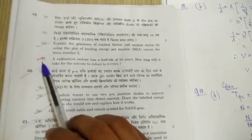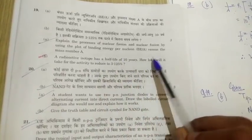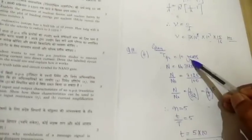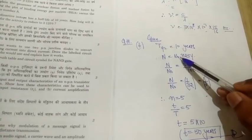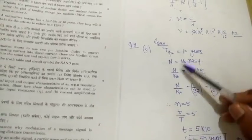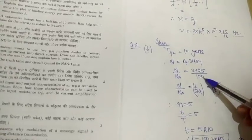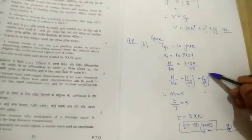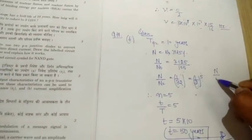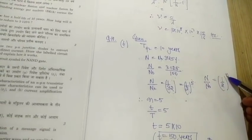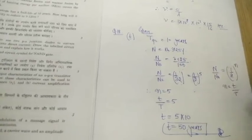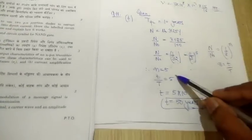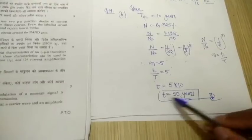Question 19B: a radioactive isotope has a half-life of 10 years. How long will it take for the activity to reduce to 3.125% of the original? Since N/N₀ = 3.125/100 = 1/32 = (1/2)⁵, the value of n = 5. Using n = t/T½, we get t = 5 × 10 = 50 years.